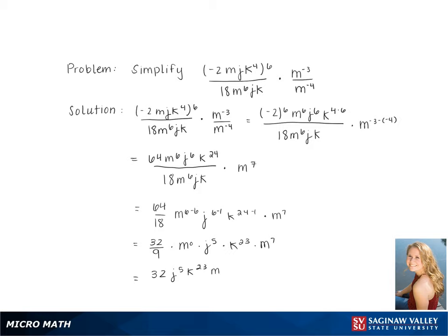As a final answer, we get 32j to the 5th k to the 23rd m to the 7th, all over 9.